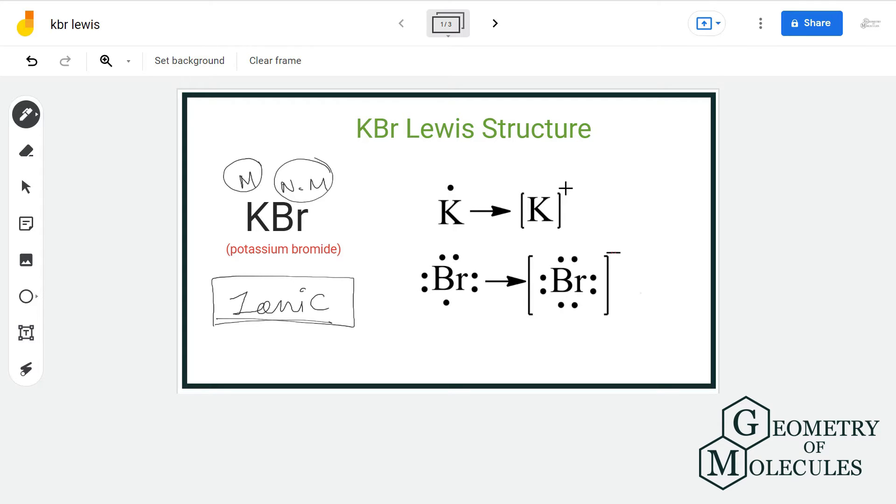Now, in ionic bond, metal donates its electron to a non-metal and gains a positive charge, and non-metal on the other hand gains a negative charge by accepting it.